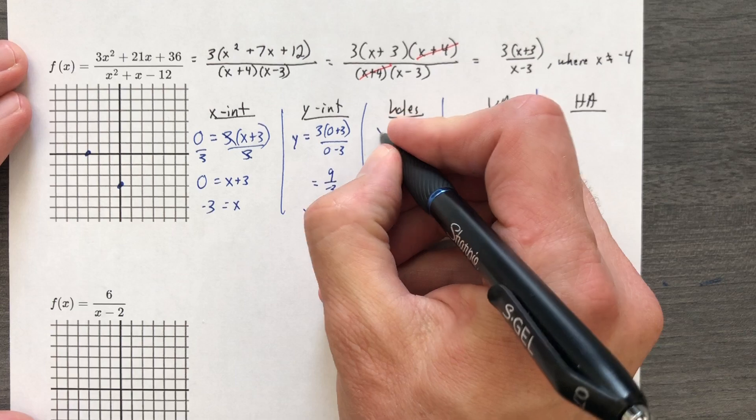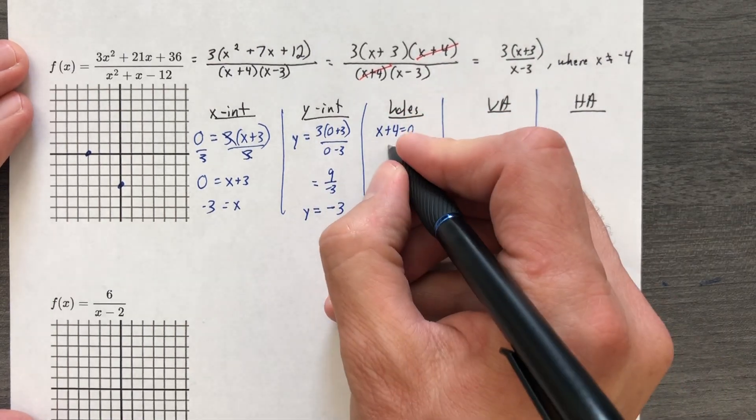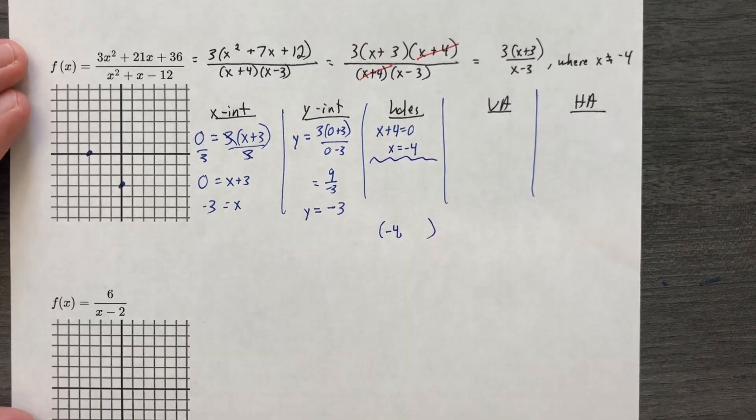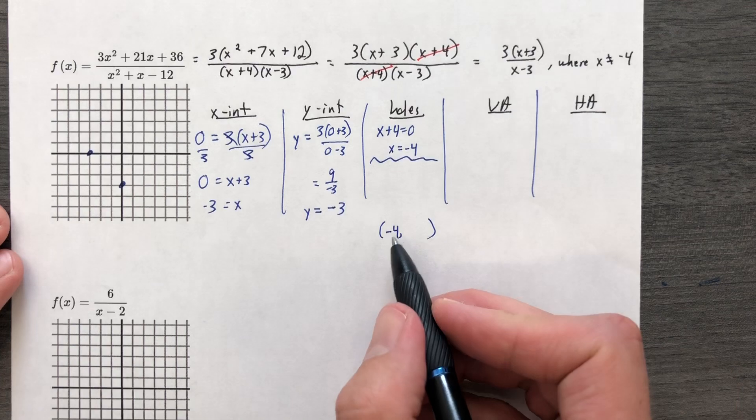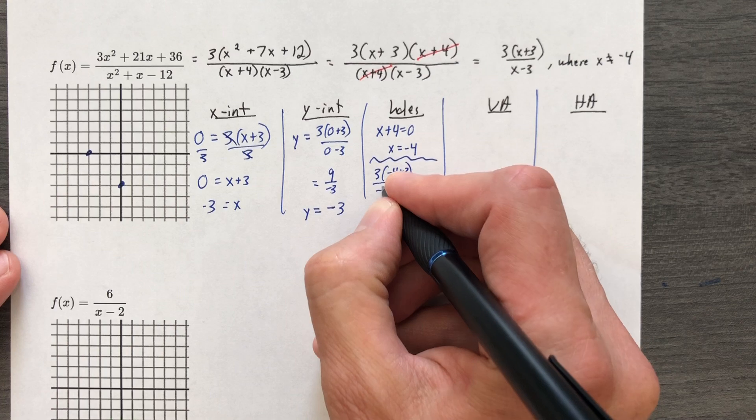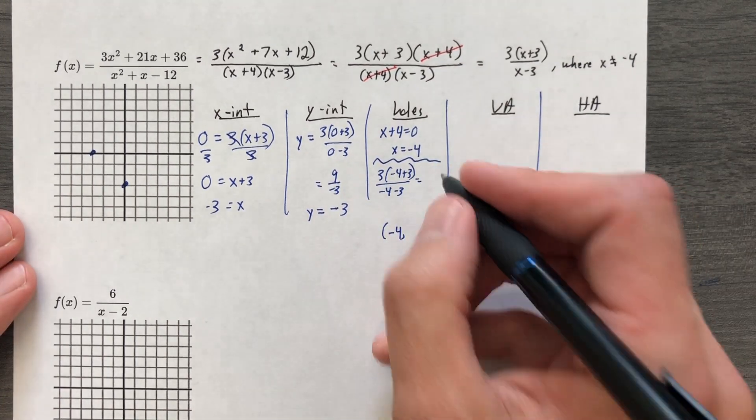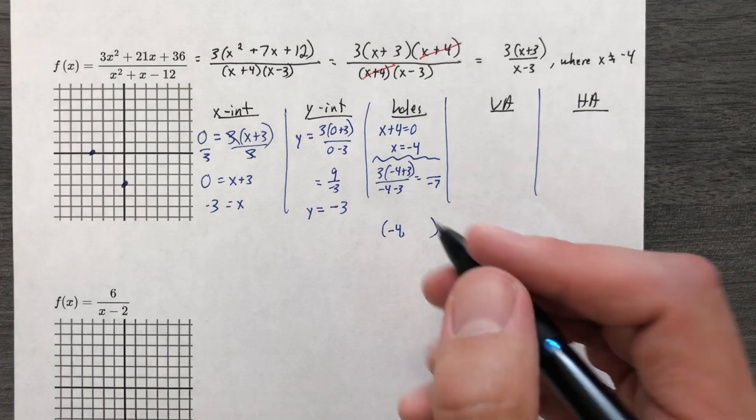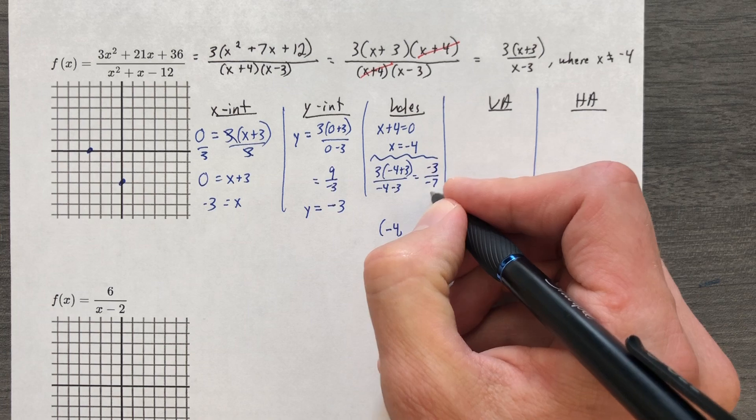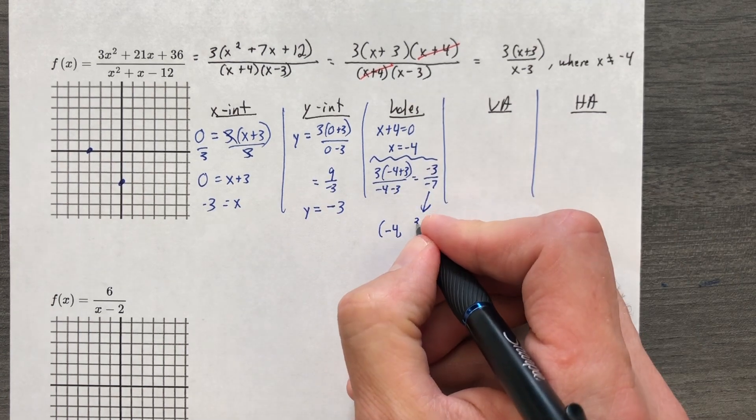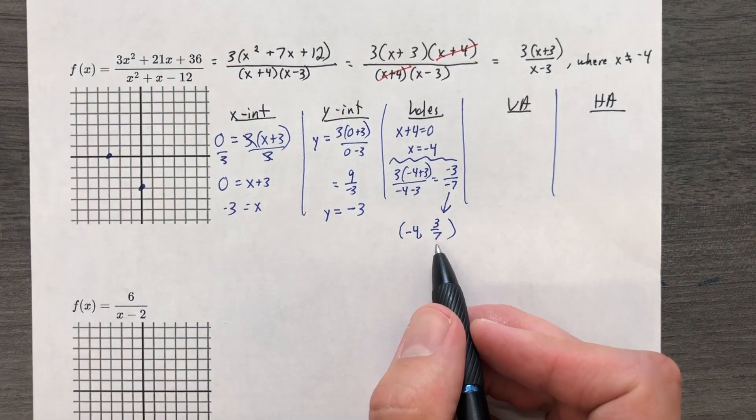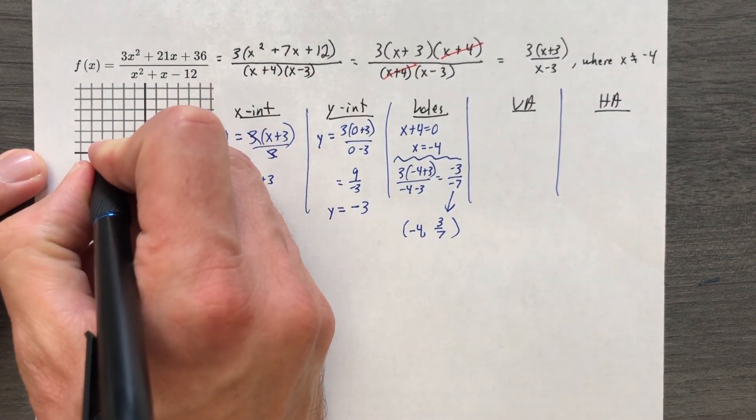Okay, holes occur where you canceled something out, where it equals 0. So it's at negative 4 comma something. We don't know what that something is, so let's find it. What we're going to do is plug in negative 4 into what remains. So we're going to have 3 and then negative 4 plus 3 over negative 4 minus 3. We're going to have negative 7 in the denominator. The numerator is going to be negative 1 times 3, so negative 3. Negative 3 over negative 7, so 3 sevenths. Let's plot the nonpoint. Negative 4 and then kind of halfway, but not quite.